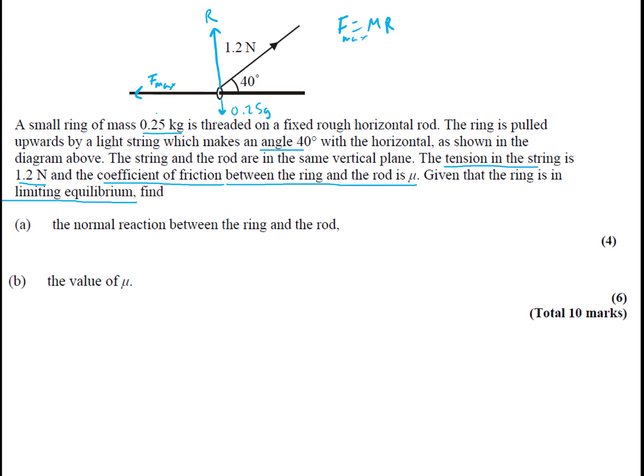Now let's resolve upwards, but let's label this. So up here you've got 40, this is the opposite, so we use sine. So we're going to get 1.2 sine 40. And then this way it's going to be 1.2 cos 40. That starts us off nicely.